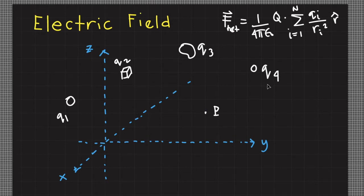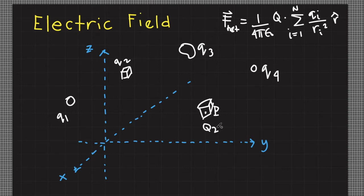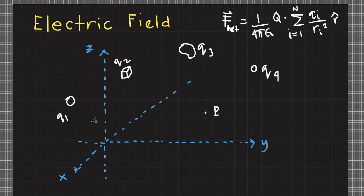If I remove the test charge Q here at point P, it doesn't mean that q sub 1, q sub 2, q sub 3, q sub 4, or all other source charges lose their influence on point P. In fact, if I place a new test charge here at point P — let's designate it as capital Q sub 2 — then this Q sub 2 will experience a force due to q sub 1, q sub 2, q sub 3, and q sub 4. In other words, any charge placed at point P will experience a force due to the source charges.